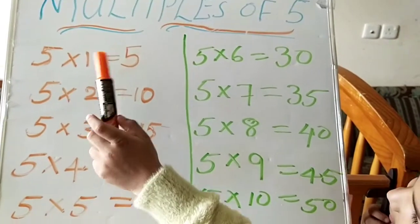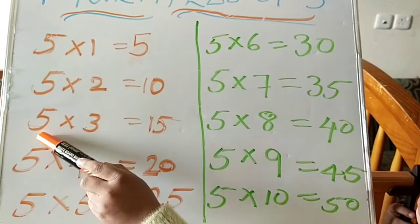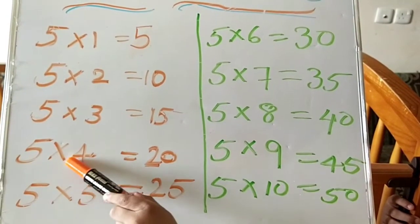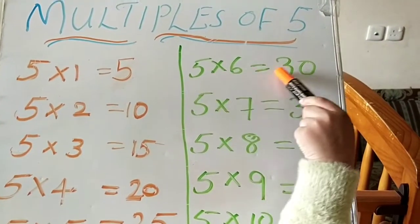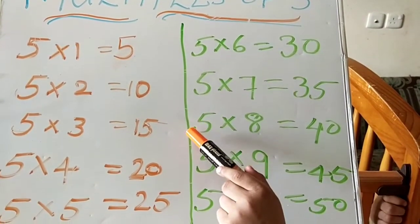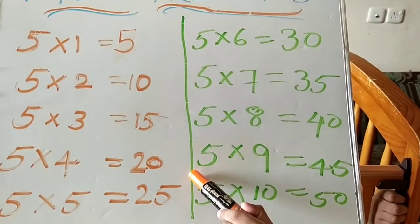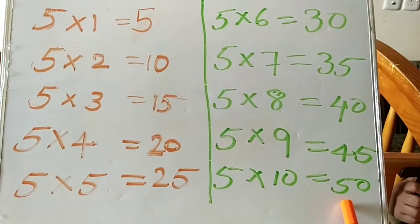Let's start again. 5 1s are 5, 5 2s are 10, 5 3s are 50, 5 4s are 20, 5 5s are 25, 5 6s are 30, 5 7s are 35, 5 8s are 40, 5 9s are 45, 5 10s are 50.